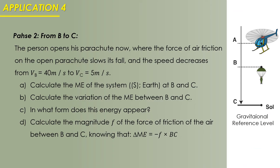Now for phase two: the person opens the parachute. Air friction slows the fall and the speed decreases from 40 meters per second to 5 meters per second. Part a: calculate the mechanical energy at points B and C. At B, mechanical energy equals 160,000 joules as before. At C, which is on the ground (reference), GPE is zero, so ME at C equals half × 80 × 5 squared equals 40 × 25 equals 1,000 joules.